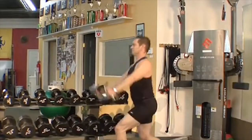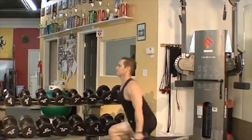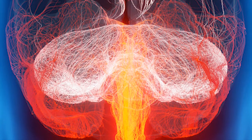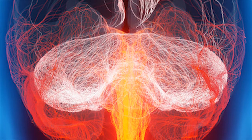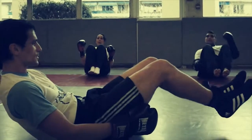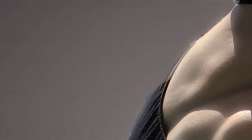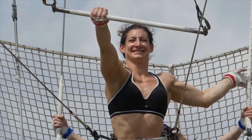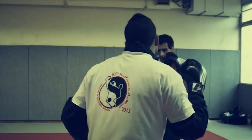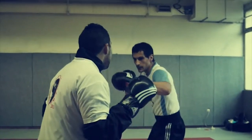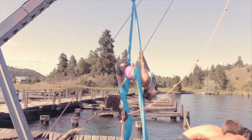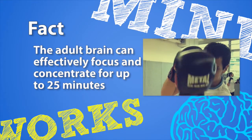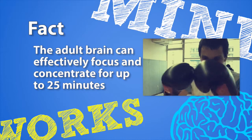Information from muscle spindles, Golgi tendon organs, and other sensory organs is directed to the cerebellum. The cerebellum is involved in the timing and coordination of motor programs, like when we learn new dance steps or a musical instrument. Actual motor programs are generated within the basal ganglia, which are involved in organizing motor programs for complex movements. Fact: the adult brain can effectively focus and concentrate for up to 25 minutes.